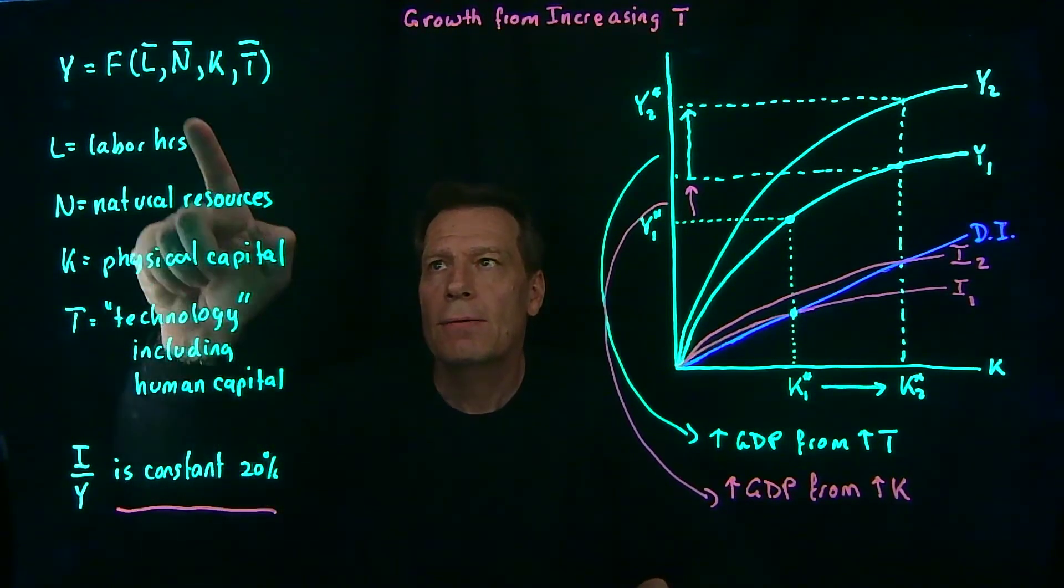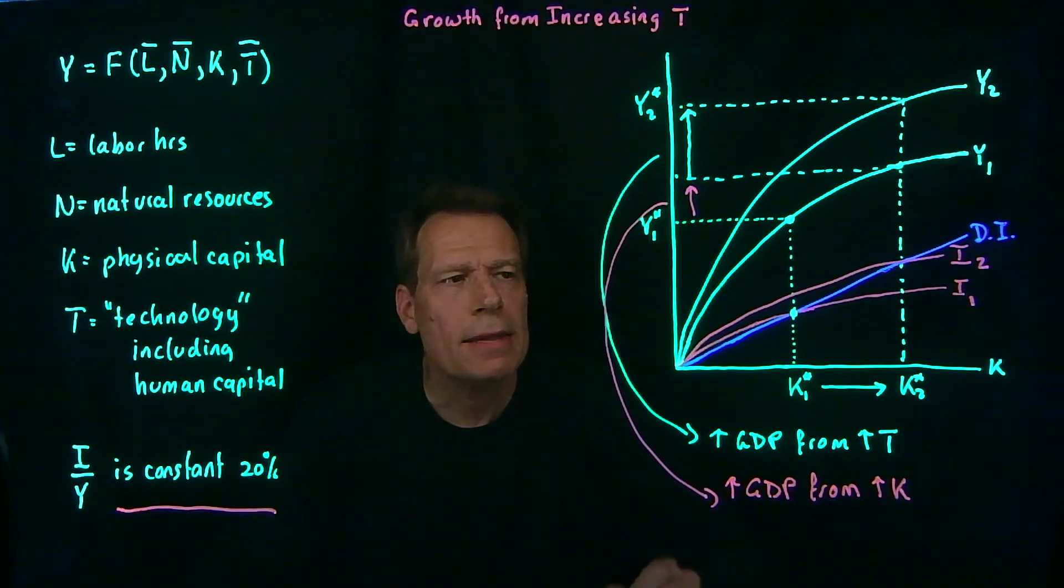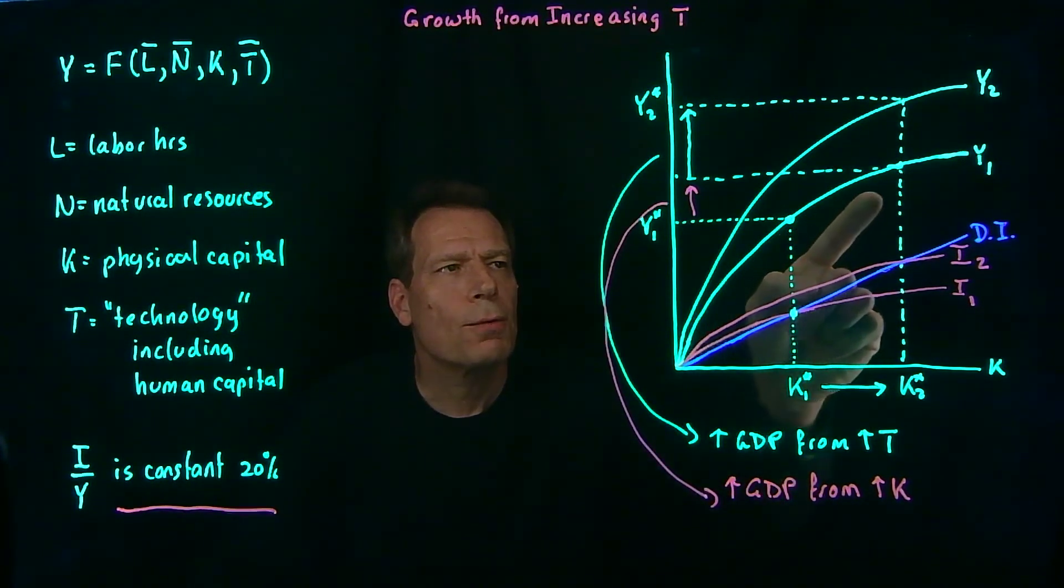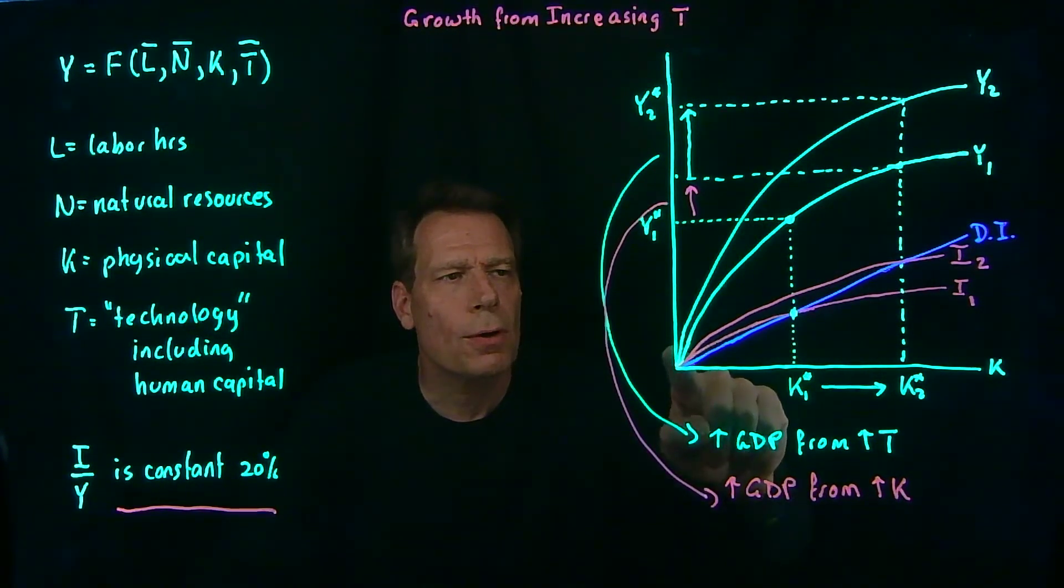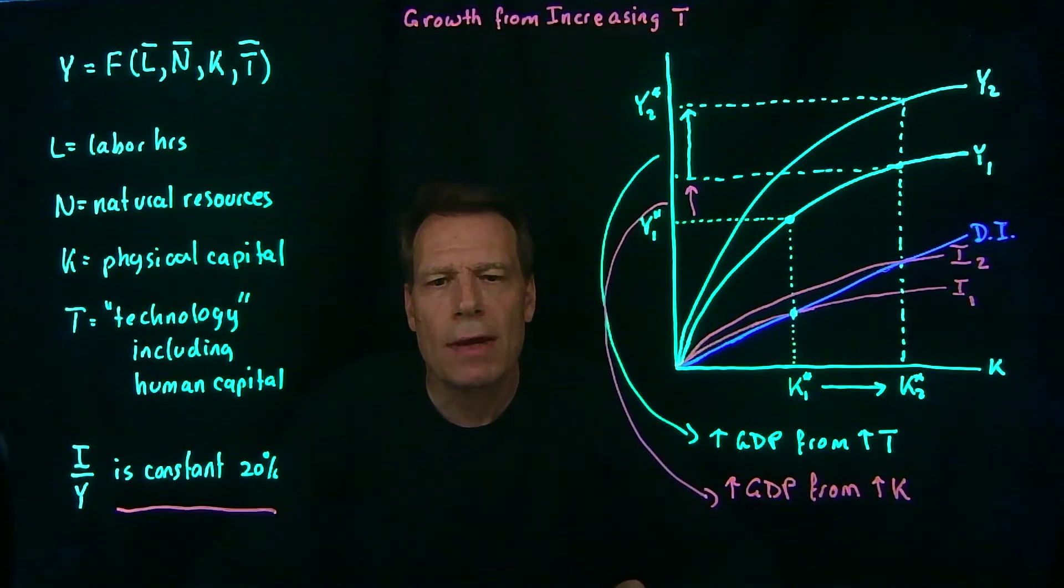We also talked about increasing natural resources, and that too would change the picture in exactly the same way. We would get a rotation upward of the GDP curve, and that would cause an upward rotation of the investment curve. But again, the problem is there's a limit to how many natural resources we can actually find by just digging for more of them. And so if all we relied on was more natural resources to produce economic growth, we would hit a ceiling.